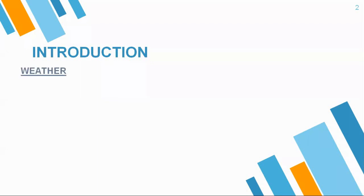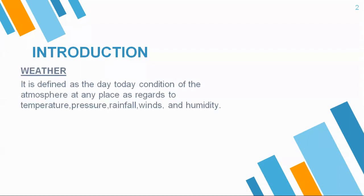Introduction about weather. What is weather? Weather is defined as the day-to-day condition which prevails over an area in regard to temperature, pressure, rainfall, wind and humidity. Weather is something which is not static, which is not permanent and keeps on changing every day — might be after two days or three days. It keeps on changing.